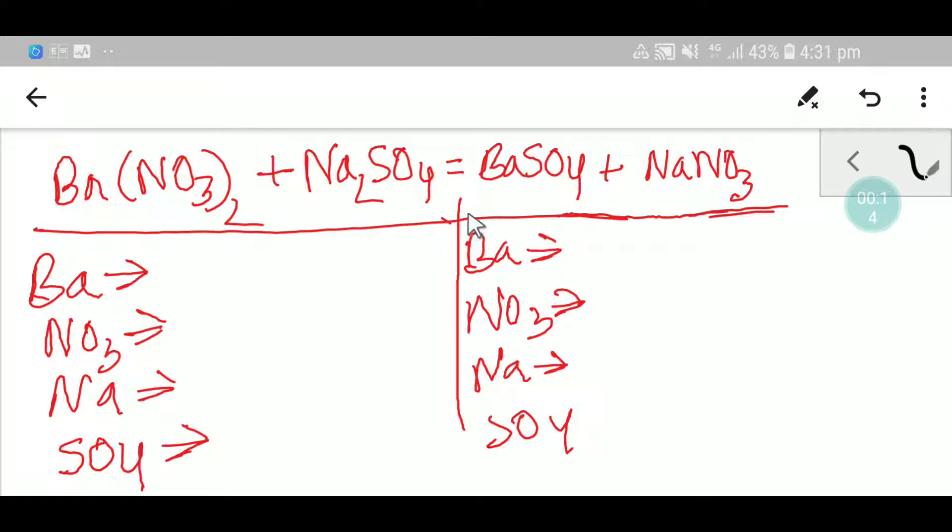To balance this reaction we have to achieve like this. On the left hand side or right hand side we have here one barium. And here we have two nitrate radicals and here we have two sodium and here we have one sulfate polyatomic ion. And here we have one barium.